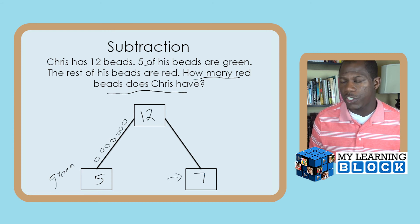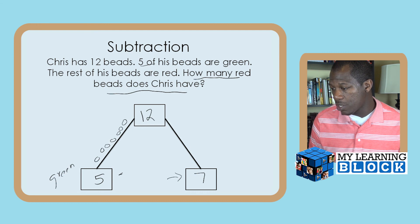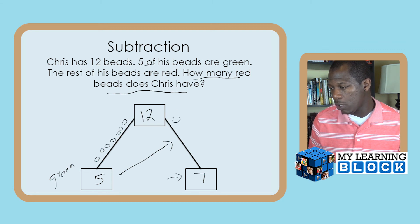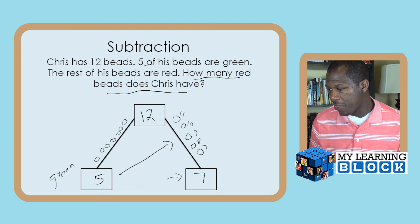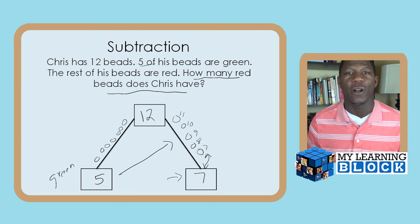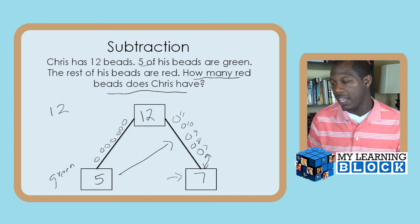Now it's time to check. We count backwards going down using the other number. Starting from 12, we draw five circles going down: one, two, three, four, five — twelve, eleven, ten, nine, eight, seven. That's the same number — seven — therefore it works. So 12 minus five equals seven. Math mountains are a great way for your child to find an unknown number, use addition and subtraction, and check their work at the same time. Thanks again for joining me on my learning block — keep learning with us, and I'll see you next time!